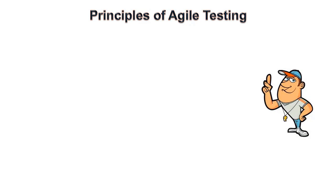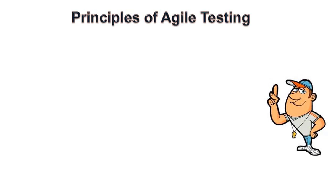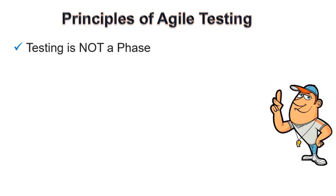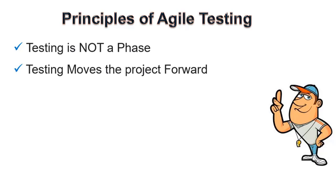Let us learn about some of the principles of agile testing. First, testing is not a phase — agile teams test continuously, and continuous testing is the only way to ensure continuous progress. Second, testing moves the project forward. When following the conventional method, testing is considered a quality gate, but in agile, testing provides feedback on an ongoing basis and ensures the product meets business demand.